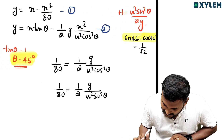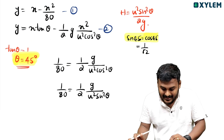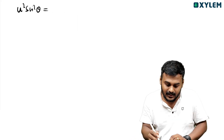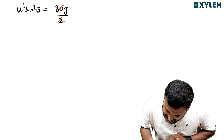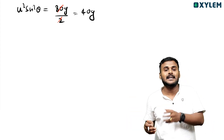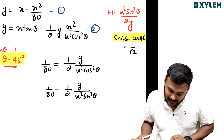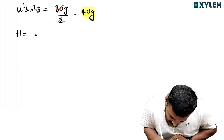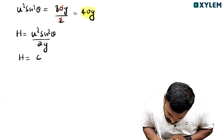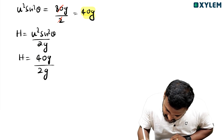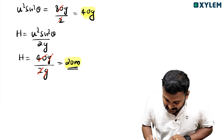We substitute into the maximum height equation. u² sin²θ equals 40g. Maximum height H equals u² sin²θ divided by 2g, so H equals 40g divided by 2g. The g cancels, giving H equals 20 metres. The maximum height is 20.